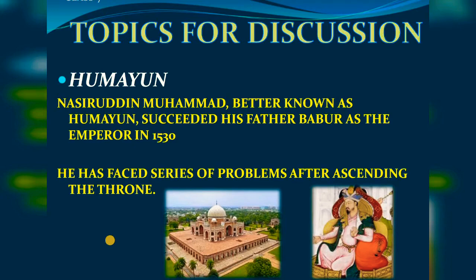Humayun had to face the hostility of the Afghans led by Sher Shah Suri, and Bahadur Shah, the ruler of Gujarat. The meaning of 'hostility' is unfriendly behavior or opposition. He had to face opposition from both Sher Shah Suri and Bahadur Shah, due to which his sultanate was shaken.